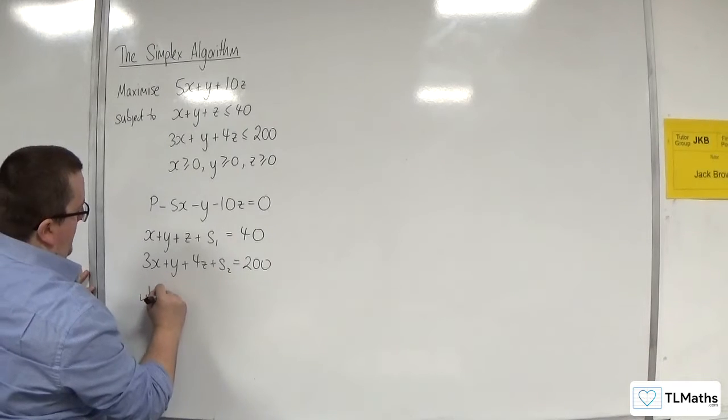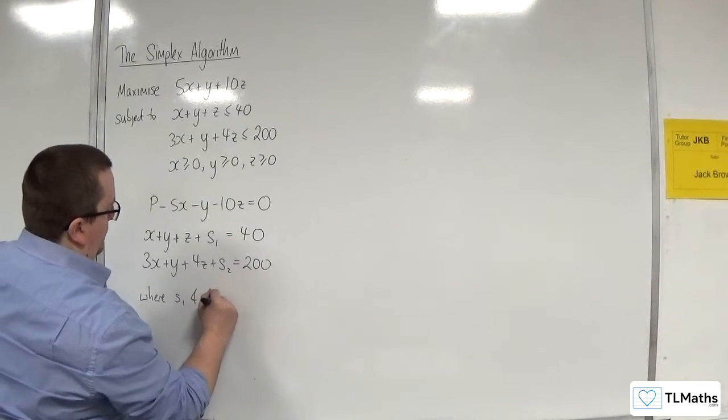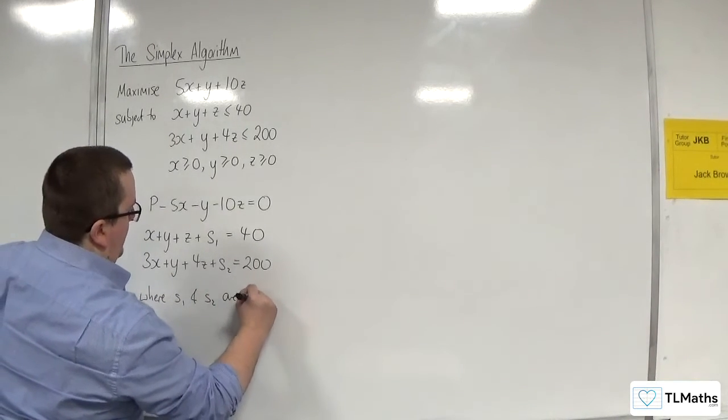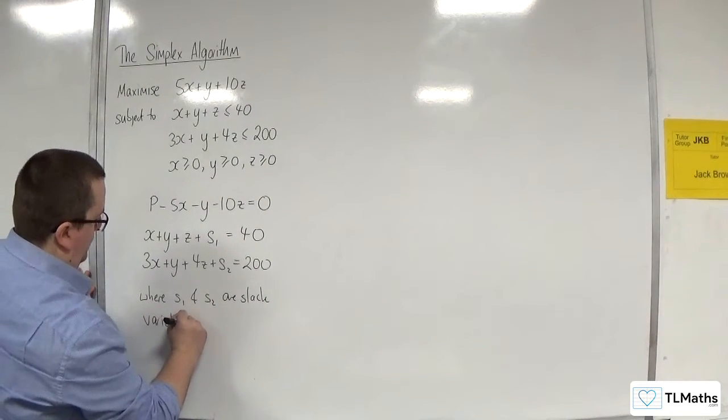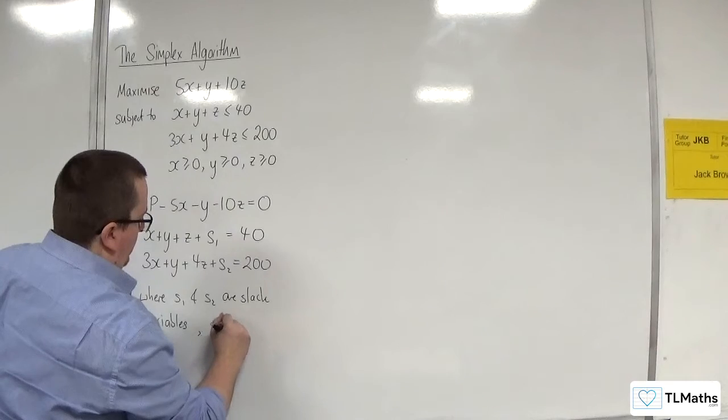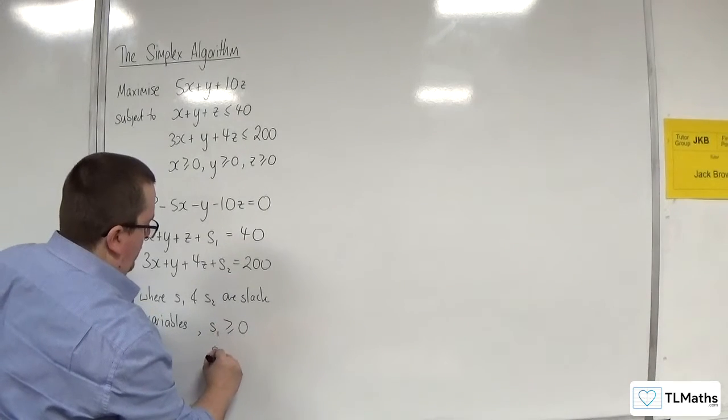And we'll have 3x plus y plus 4z plus s2 is equal to 200. So where s1 and s2 are slack variables. s1 is going to be greater than or equal to 0, s2 is greater than or equal to 0.